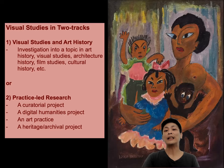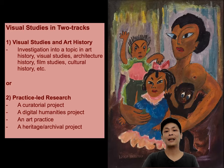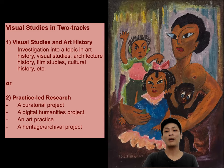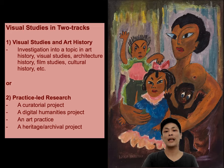So here in the visual studies program, we like to think of research along two tracks. The first track is more firmly rooted in the academic convention of the humanities. As a field of study, the candidate embarks on investigating a topic related to art history, visual studies, architecture, film studies, or cultural history. At the end of their exploration, they're required to produce a written document that contains their research findings as well as reflect on their research process.